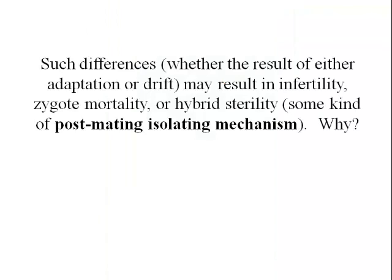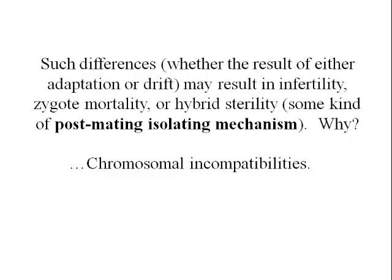These kinds of differences — whether resulting from adaptation to different environments or genetic drift — will eventually result in infertility, zygote mortality, or hybrid sterility: some kind of post-mating isolating mechanism where after mating it doesn't produce viable young. Why would populations drifting apart not be able to breed successfully anymore? Chromosomal incompatibilities. If those differences are determined by genetics, the chromosomes and molecular structure become so different that when egg meets sperm and mitosis begins, the process falls apart because the molecular structures are now too different.